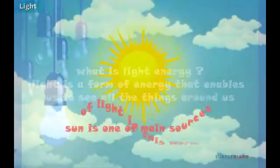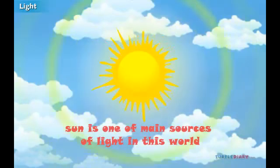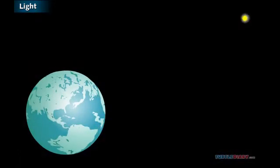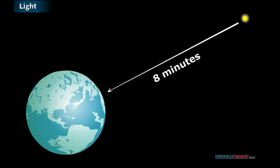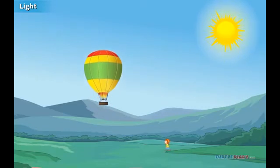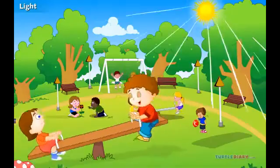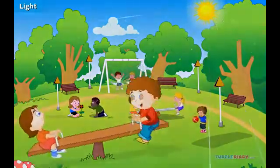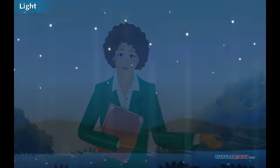Look at this picture. As we know, the sun is one of its sources. The sun is a big star that is far away from the earth. Light of the sun takes eight minutes to reach the earth. Because of the light of the sun, we can see everything during the day. It also provides energy for other life on the earth.